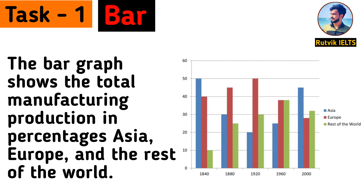If I'm talking about Task 1, Task 1 was a bar chart. The bar graph shows the total manufacturing production in percentages for Asia, Europe, and the rest of the world.